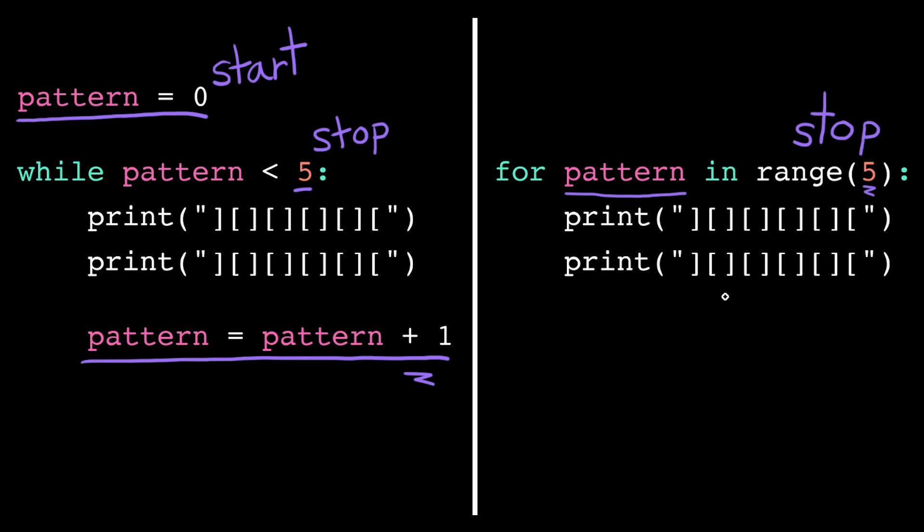This while loop and this for loop are now equivalent. They do exactly the same thing when executed. Note that with the for loop though, I didn't include these two assignment statements. I don't need to initialize my loop variable to a start value, and I don't need to update it on each loop iteration. The for loop statement takes care of all of that for us behind the scenes.